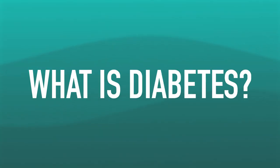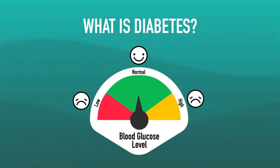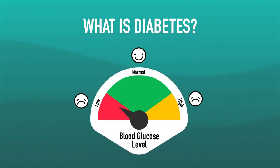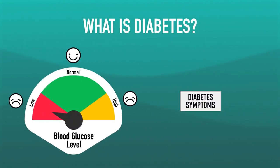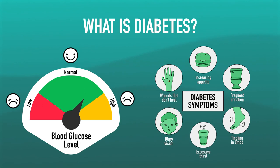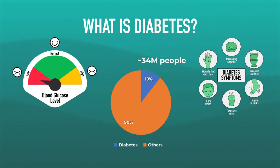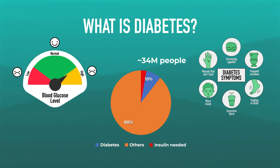Diabetes is a condition in which the body's ability to maintain normal blood glucose level is impaired. It affects approximately 10% of the US population, and about a quarter of people with diabetes require insulin treatment.